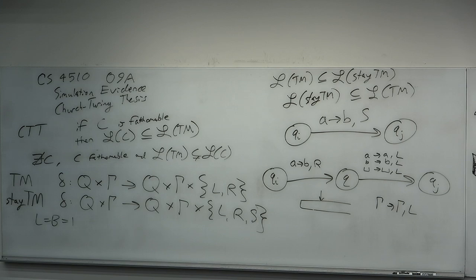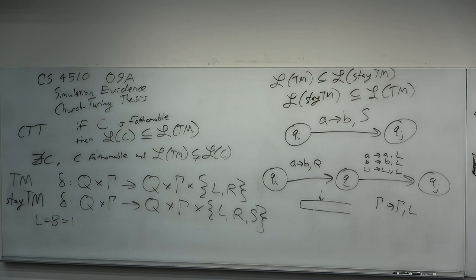One simulation approach: do the Hilbert Hotel thing — make two copies, one for each direction, index half the tape in even cells and half in odd cells. Another simulation: fold the tape in half. We grow the tape alphabet to gamma-squared — symbols of the form A over B where A and B are in gamma — creating two symbols in each cell. We compactify the two halves by folding the tape over.